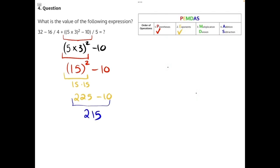So now that we have found the value of this set of parentheses, 215, we can rewrite the expression and continue to solve using order of operations. 32 minus 16 divided by 4 plus, instead of the set of parentheses, we know that that equals 215 divided by 5.